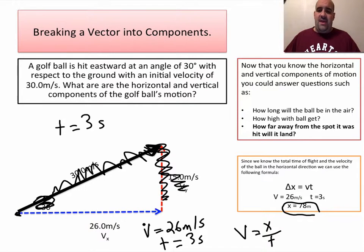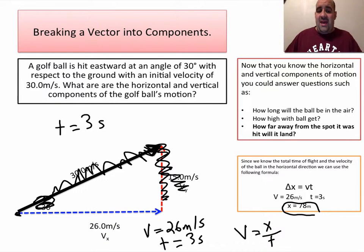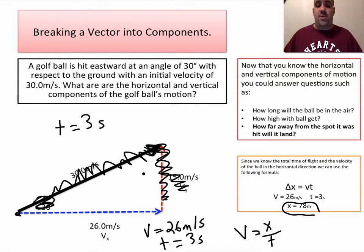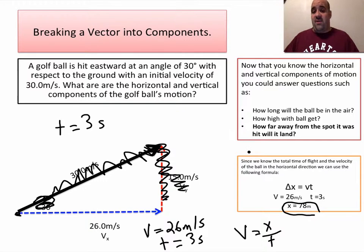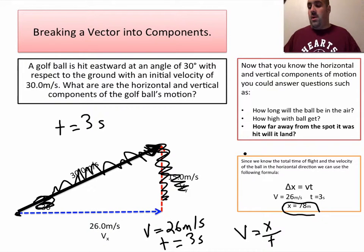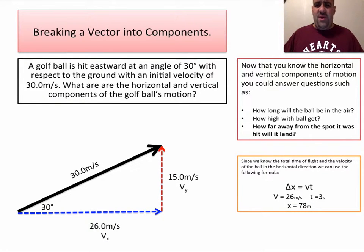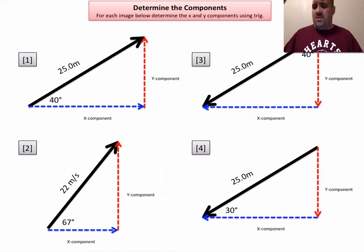I can't stress how important this is. Breaking a vector into components — taking a vector and getting an x and y component — allows us to solve projectile motion problems. Without doing that, we cannot answer these questions about how long an object will be in the air, how far away it will go, and so on.